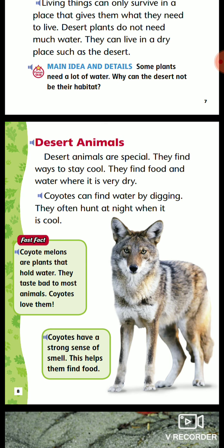Desert Animals. Desert animals are special. They find ways to stay cool. They find food and water when it is very dry. Coyotes can find water by digging. They often hunt at night when it is cool.